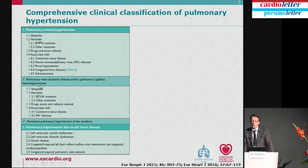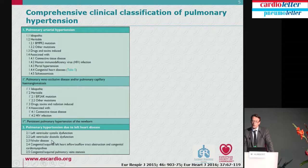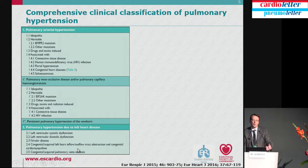Very close to Group 1, you have patients with remodeling predominating in the veins. This is a very rare condition, with a prevalence around 1 per million in France, compared to about 25 per million for Group 1. Then you have the very common diseases: PH due to left heart disease, including left ventricular systolic dysfunction, diastolic dysfunction, valvular heart disease, and other congenital heart disease.